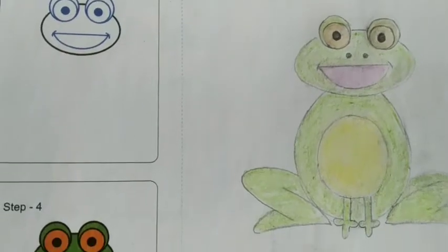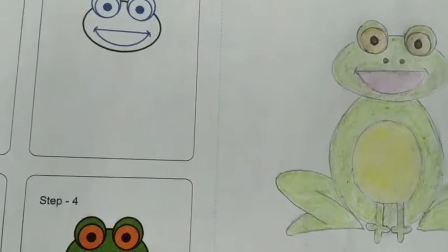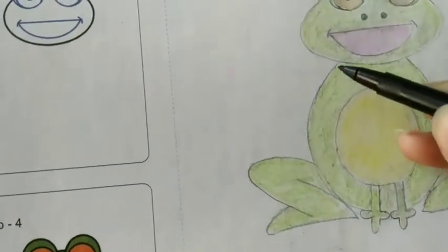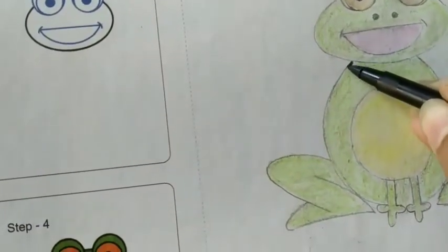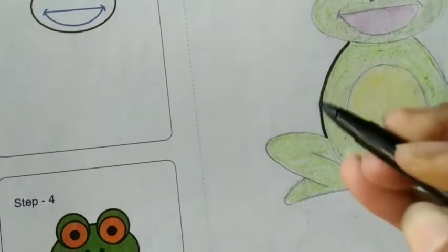So here we can see our drawing is completed. Now we will do the last step. So the last step is to give outline with the help of the sketch color or a black pen. Like this, you have to give outline.